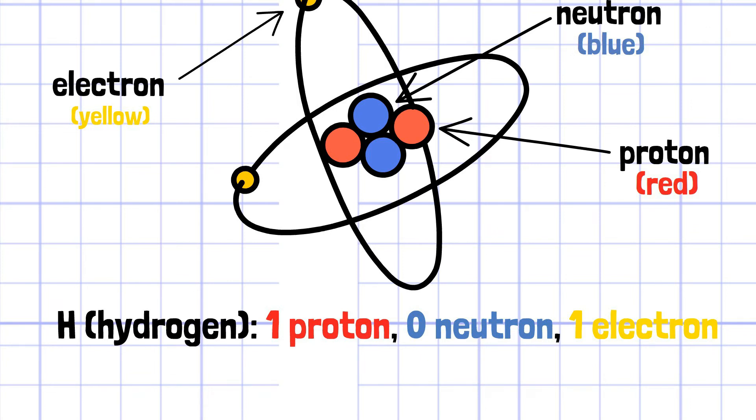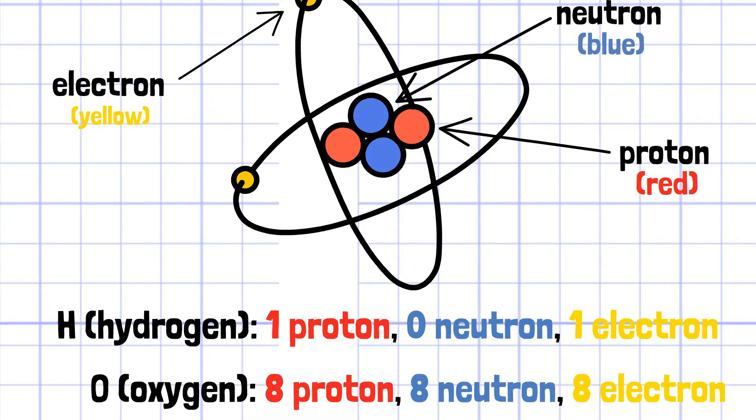For example, the simplest element in the universe is hydrogen, and it is composed of one proton and one electron. Ordinary oxygen atom is composed of eight protons, eight neutrons, and eight electrons.